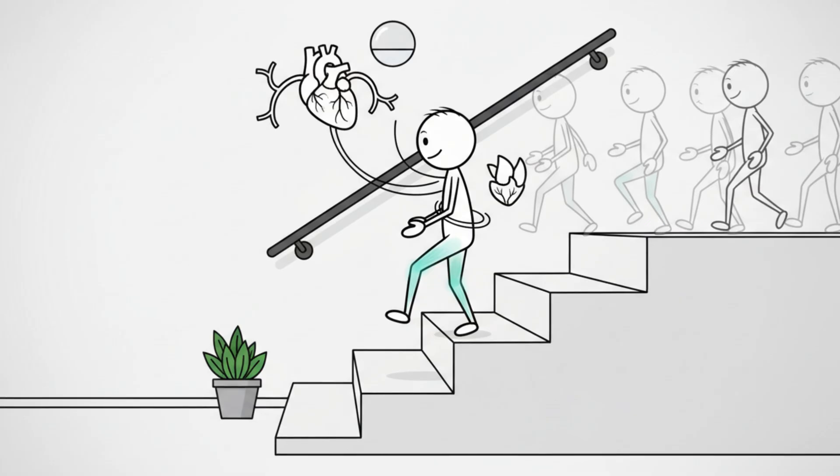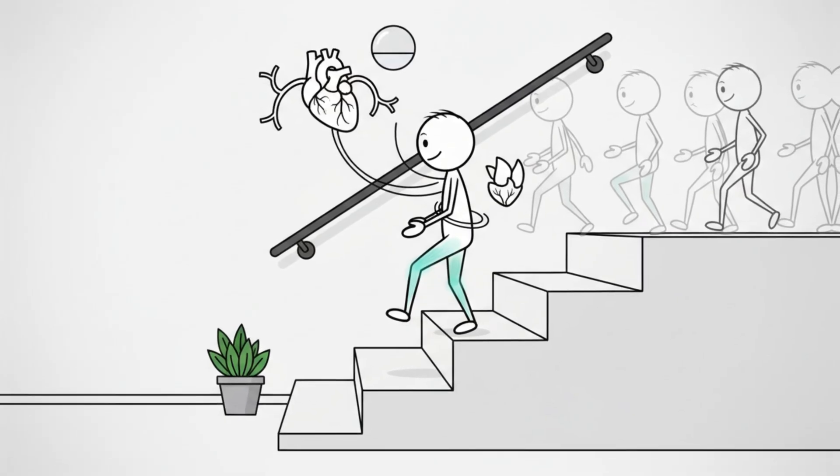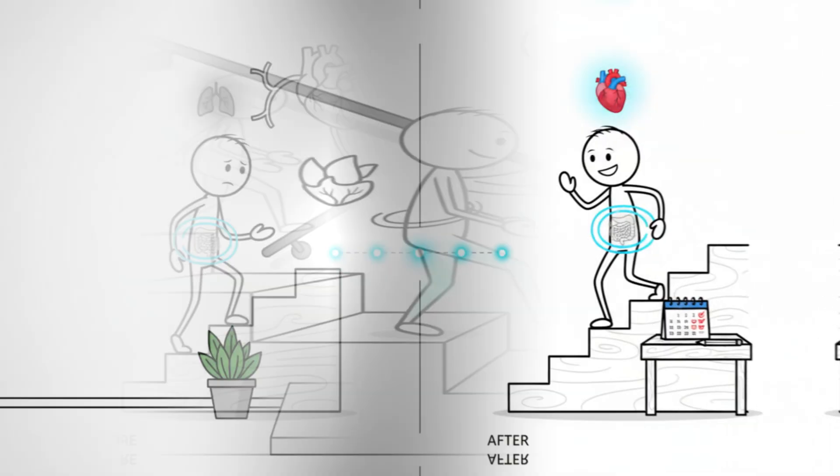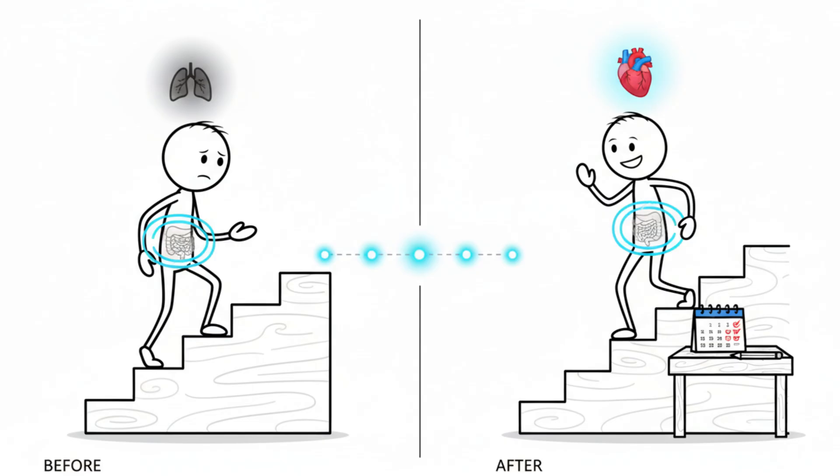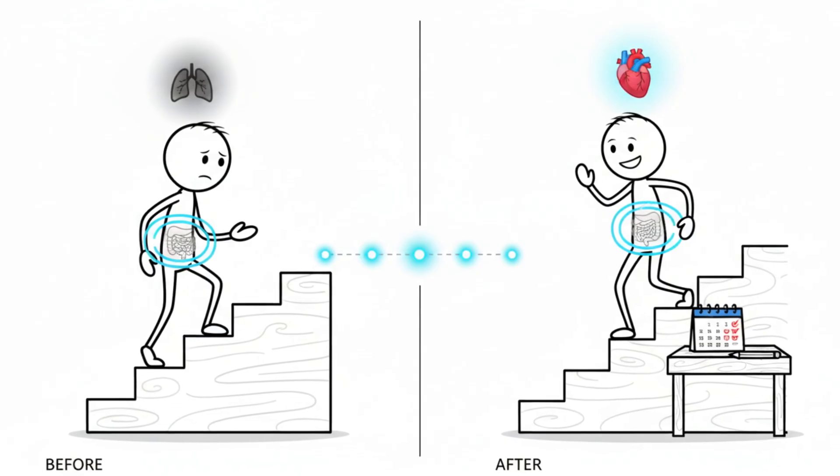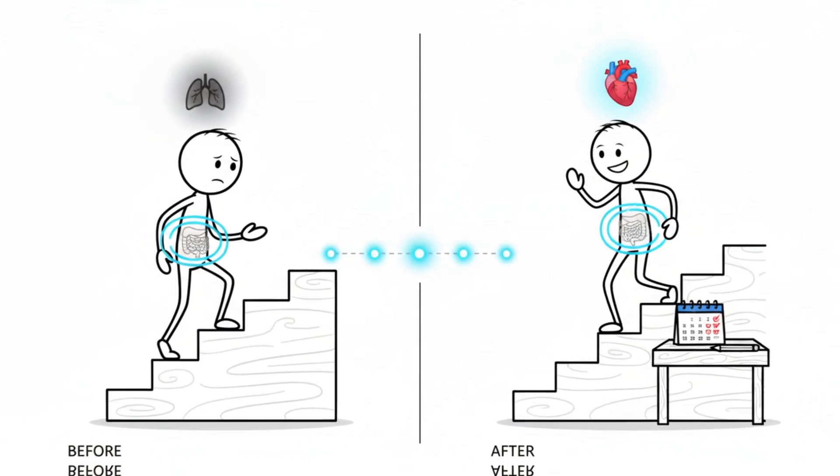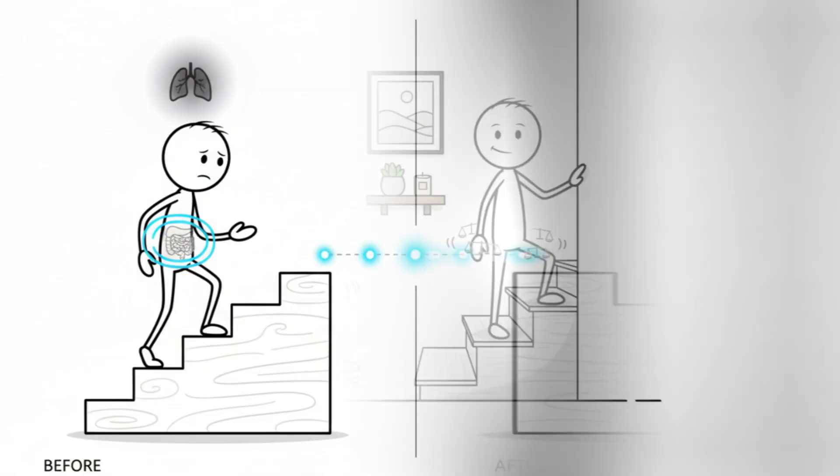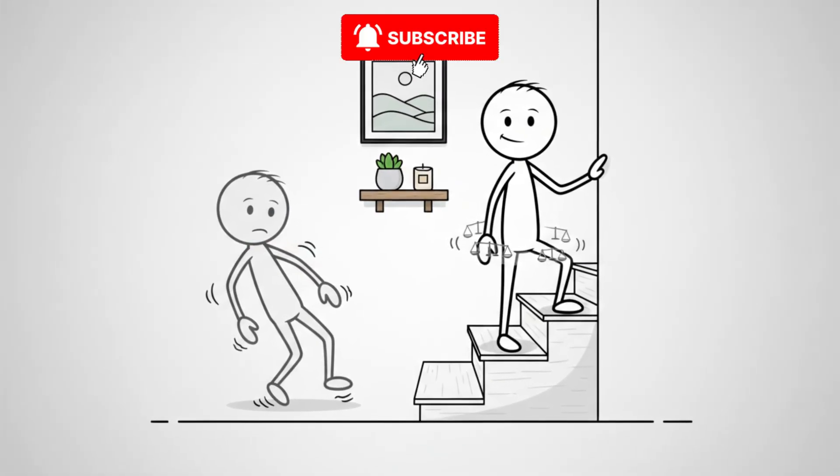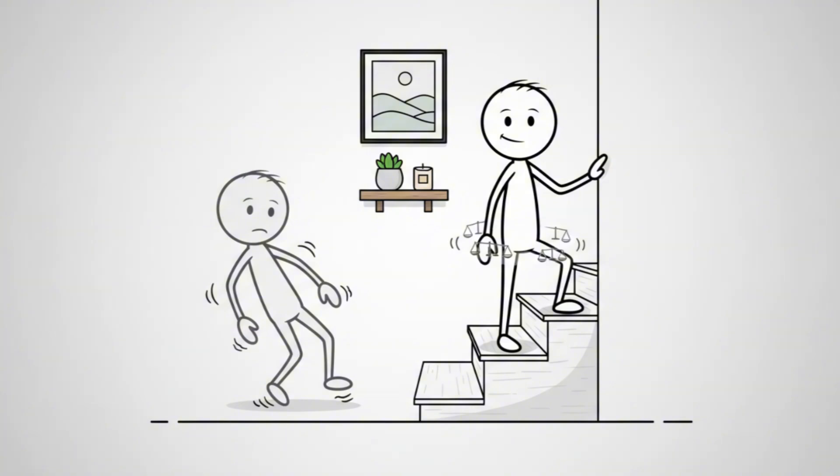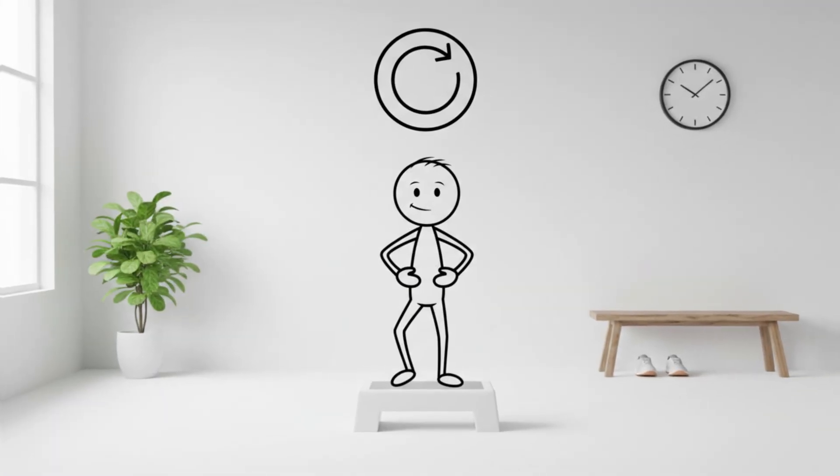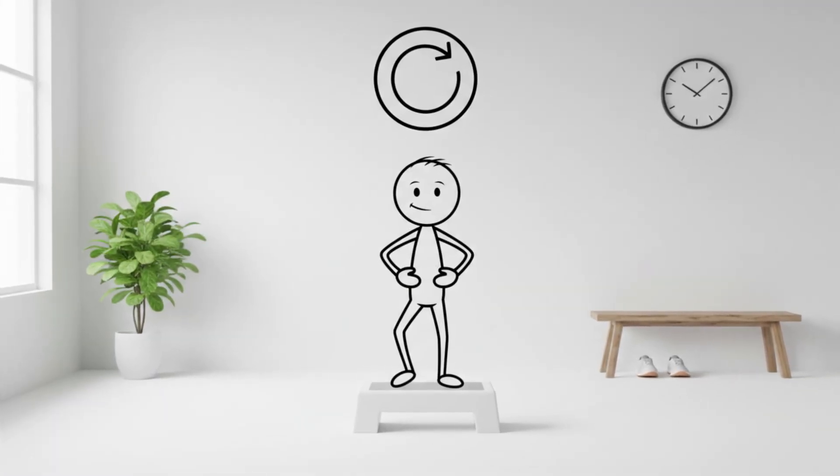Your quadriceps and glutes do most of the work here, but because the motion is repetitive and predictable, your cardiovascular system adapts efficiently. Over time, this routine improves both aerobic capacity and insulin sensitivity, two key factors linked to visceral fat reduction. If balance is a concern, keep one fingertip lightly on a wall or chair. Stability allows you to maintain rhythm without spikes of effort. The beauty of this exercise is its simplicity. One step, a controlled pace, and consistent movement.